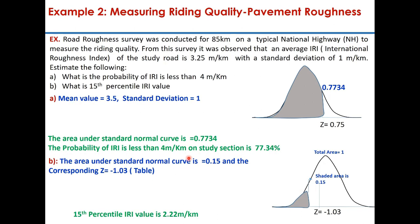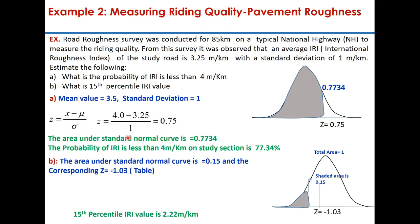Another example: the riding quality of pavement is measured over 85 km of a national highway. The IRI values have a mean of 3.25 m/km and standard deviation of 1 m/km, and this data follows a normal distribution. The question is: what is the probability of IRI being less than 4 m/km? You calculate z = (4 − 3.25) / 1 = 0.75. From the table, the area corresponding to z = 0.75 is 0.7734, so the probability of IRI being less than 4 m/km is 77.34%.